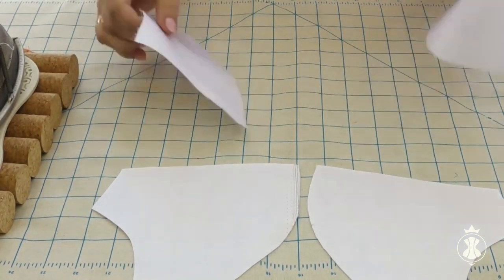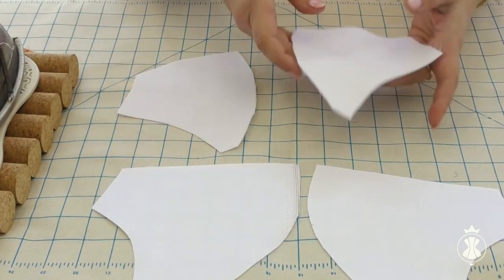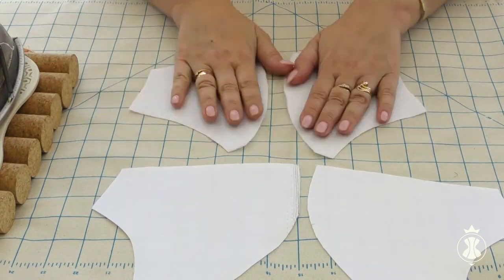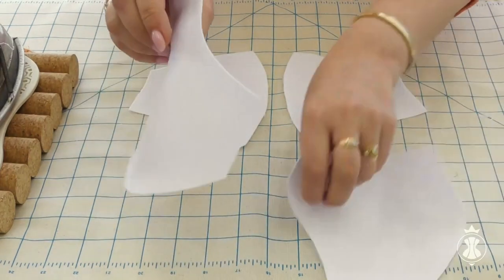Now I should glue the internal layers to the main pieces of the lining. I place the lining pieces with the glue layer up.